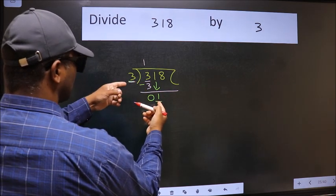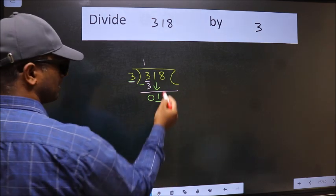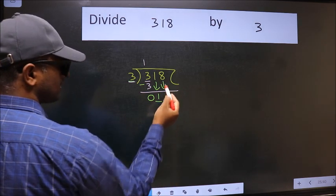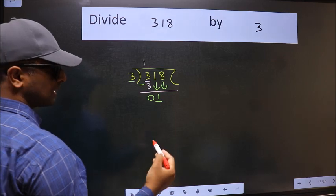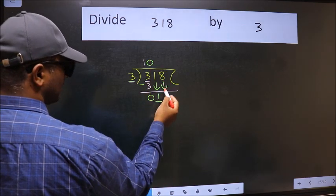1 is smaller than 3. So we should bring down the second number. And the rule to bring down the second number is we should put 0 here. Then only we can bring down this number.